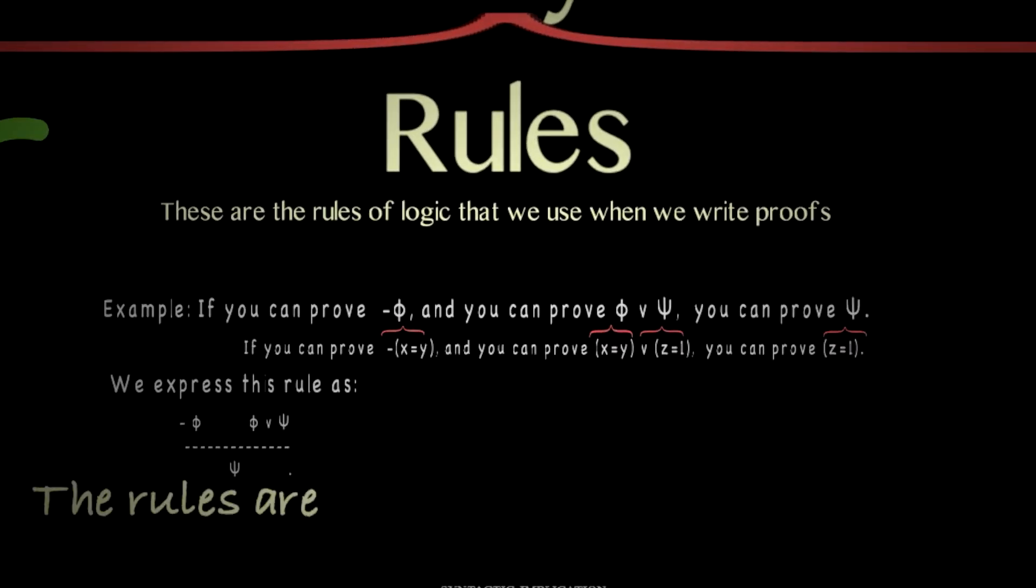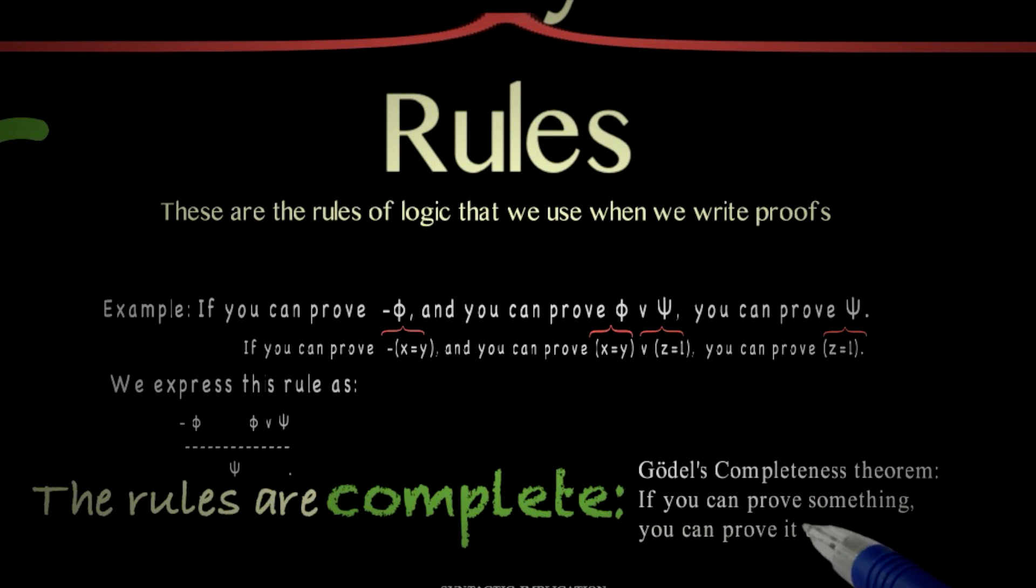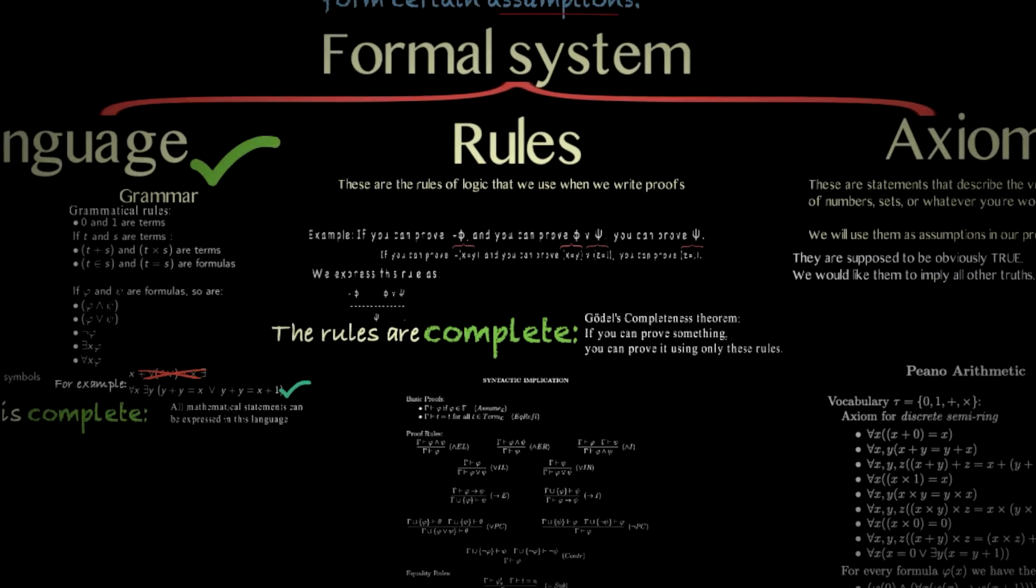Then the rules. They're also complete. This is not a simple observation like the previous ones. There is no reason to believe at first that these few rules are going to be enough to formalize all arguments mathematicians want to make. Arguments come in all shapes and forms. But surprisingly, they are enough. This is another of Gödel's famous theorems. It's called the completeness theorem. And it says that if you can prove something, you can prove it using only these rules. It actually says that if a statement is true in all possible universes, then it can be proved using these rules. There are some subtleties here that I'm leaving for another time.